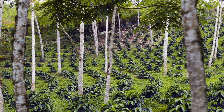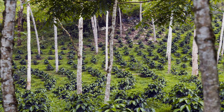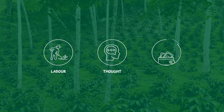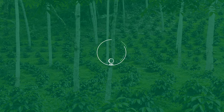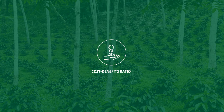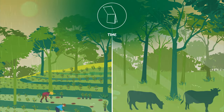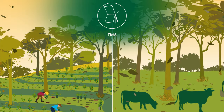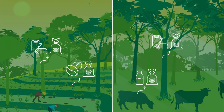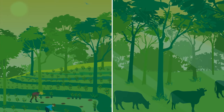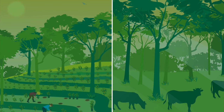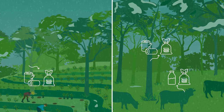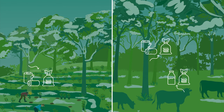Establishing agroforestry requires careful planning and design. At the early stage, structured agroforestry requires more labor, thought, and money, but often provides a better cost-benefit ratio in the long term. If managed well, agroforestry systems are productive for a long time and provide farmers with multiple services and diverse revenues throughout the year. They result in a highly resilient land use strategy, which can withstand extreme weather events and climate change and reduce risks for farmers in case of crop failure.